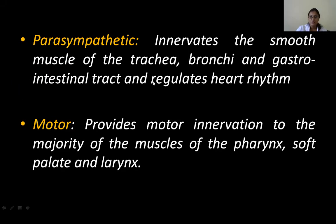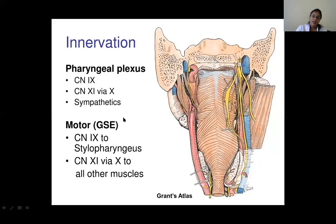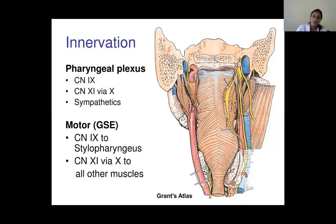The parasympathetic component innervates smooth muscle of the trachea, bronchi, and GI tract, and regulates heart rhythm. Motor innervation goes to the majority of muscles of the pharynx, soft palate, and larynx. Pharyngeal branches of the vagus join with sympathetic fibers to form a plexus on the middle constrictor, and via that the vagus supplies the constrictors of the pharynx and soft palate muscles.